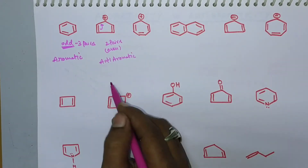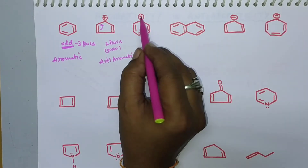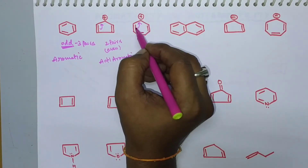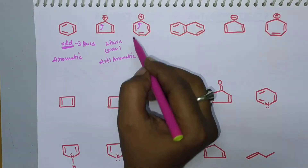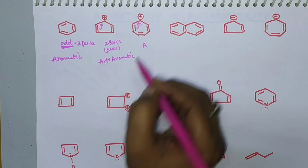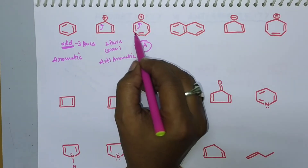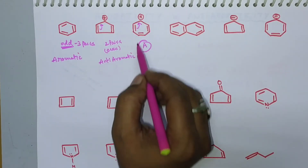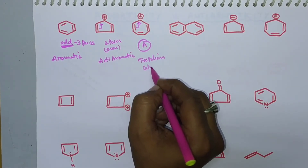The cycloheptatrienyl cation has seven carbons and involves in resonance as the positive charge delocalizes. It consists of three pairs of electrons — an odd number — so it is an aromatic compound. This is also called the tropylium cation.